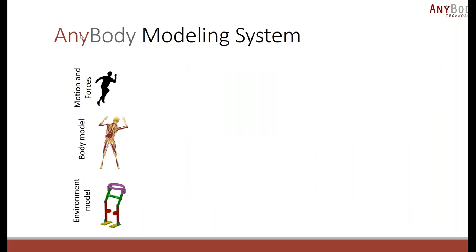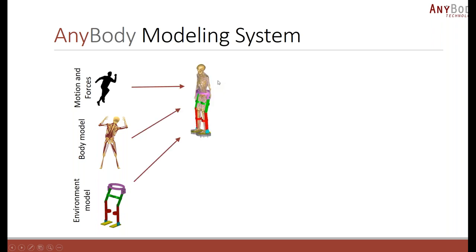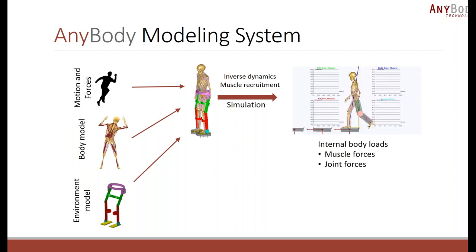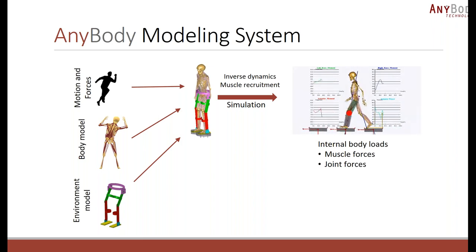The typical approach is to combine several components. The input subjects the human body model to motion and external forces, which together with the environment are combined into the model of interest. For example, a human in an exoskeleton where external forces are the ground reaction forces acting on the feet. The system then solves inverse dynamics tasks where we compute muscle forces using the direct muscle recruitment algorithm.